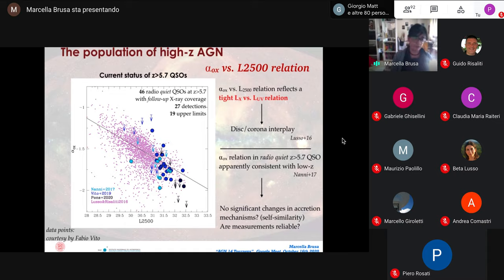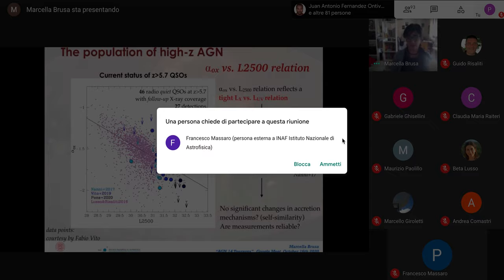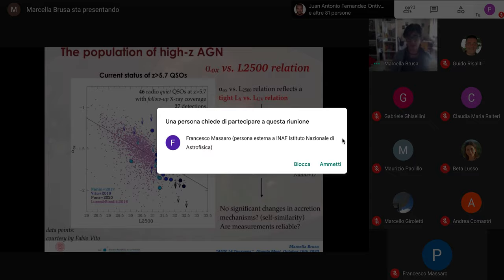Speaking about the X-ray to optical spectral slope, there is a very well-known anticorrelation between this quantity and the UV luminosity. This reveals a universal physical mechanism that regulates the energy transfer from the accretion disk to the X-ray emitting corona. The X-ray to optical flux ratio can also be related to the presence or absence of line-driven disk winds. These properties are related to the accretion properties and the Eddington ratio of the sources. It's really important to study these observables, especially at very high redshift.